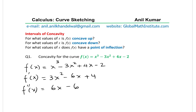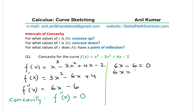To check for concavity, we find when the second derivative equals zero. We equate 6x - 6 = 0, solving we get 6x = 6, giving us x = 1. So we know at x = 1 the second derivative of the function is equal to zero.